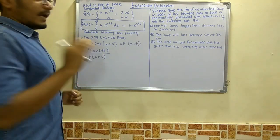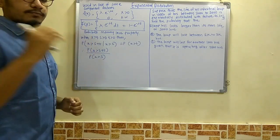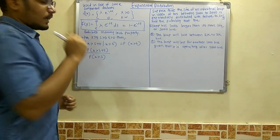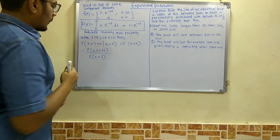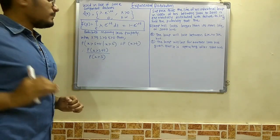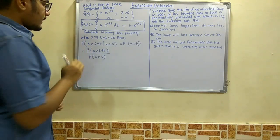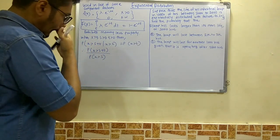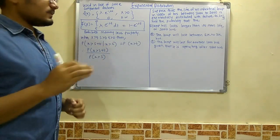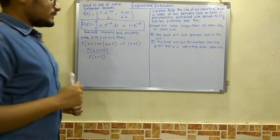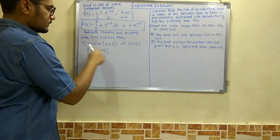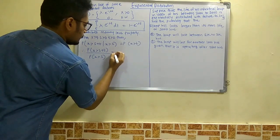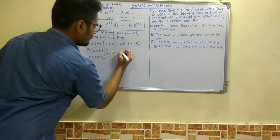When an additional parameter s comes into the picture alongside x and t, the equation changes. We have the probability statement: P(X > s + t | X > s) = P(X > t). To prove this, we write it as P(X > s + t) divided by P(X > s).